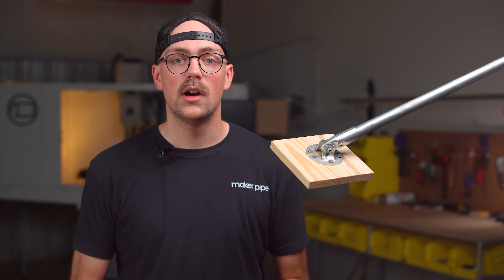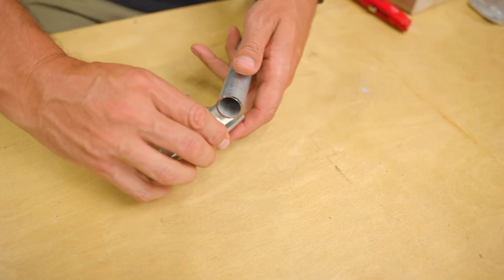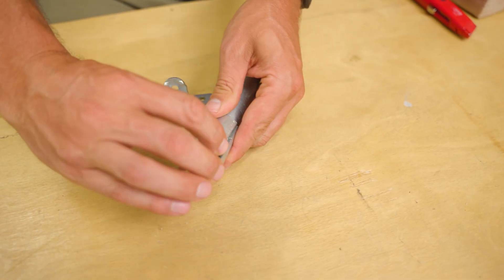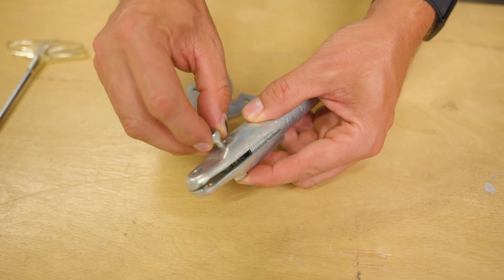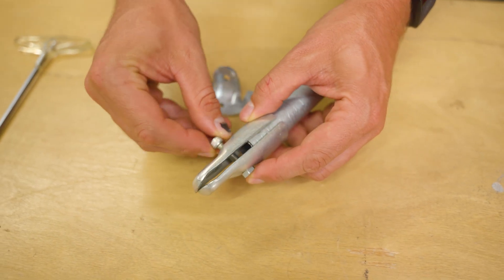To assemble the adjustable angle flange you will start by securely clamping a piece of conduit inside of the end clamp. Both pieces that make up this clamp are the same so the orientation of the pieces doesn't matter. You will clamp the two pieces together around the end of the piece of conduit like so.